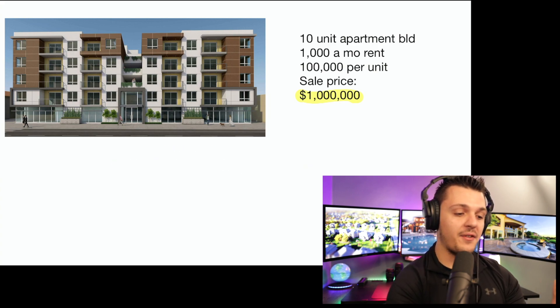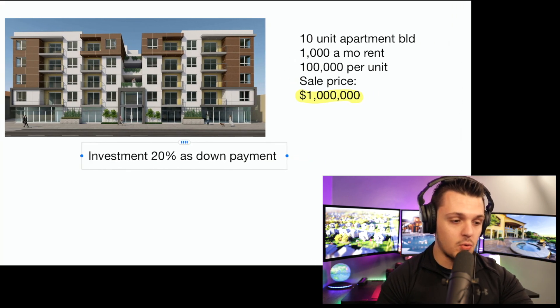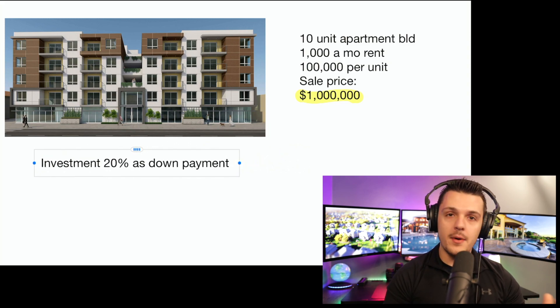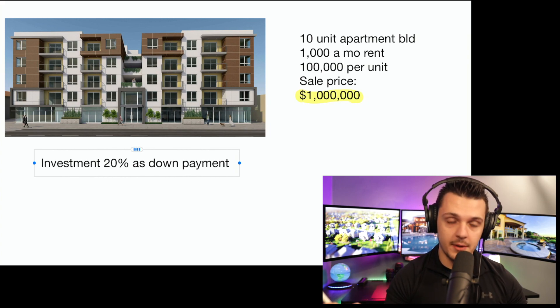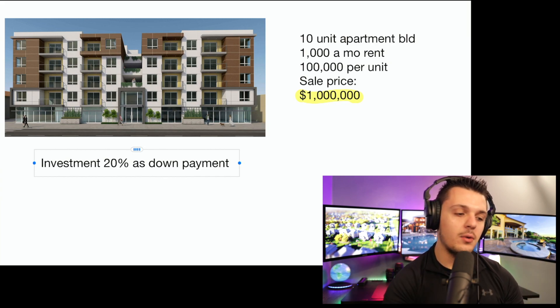The bank requires 20% down because they feel safe once you have equity in the deal. People might not default on their primary residence, but they might on an investment property. Build a good relationship with a bank. If you're starting out, go find a mortgage broker or a credit union — these two are your solution. Credit unions offer cheap interest rates; mortgage brokers know the ins and outs and have your best interest in mind.